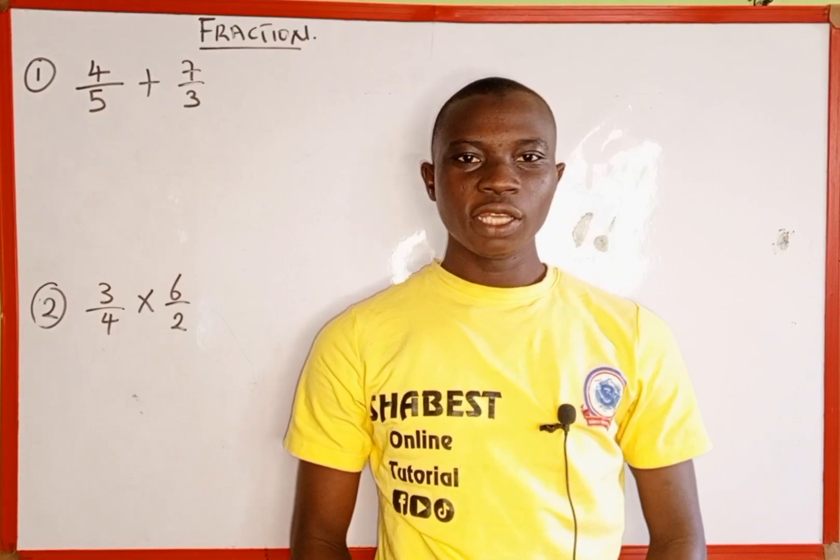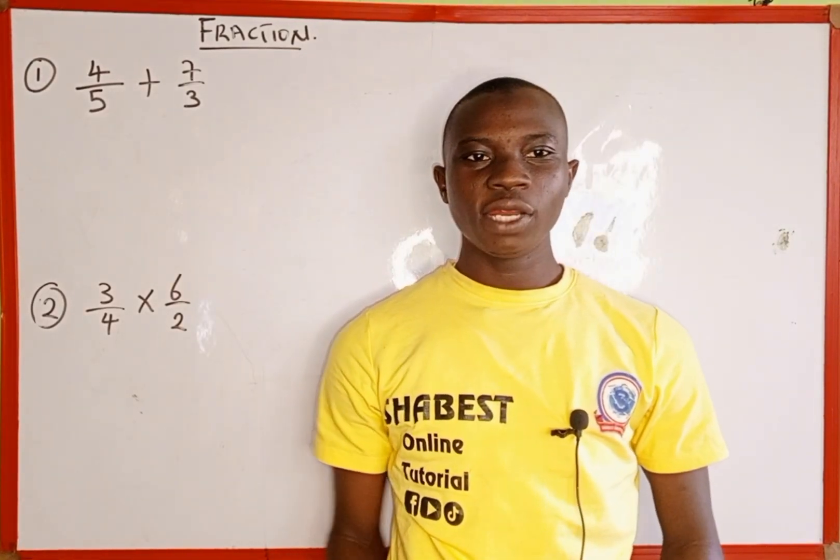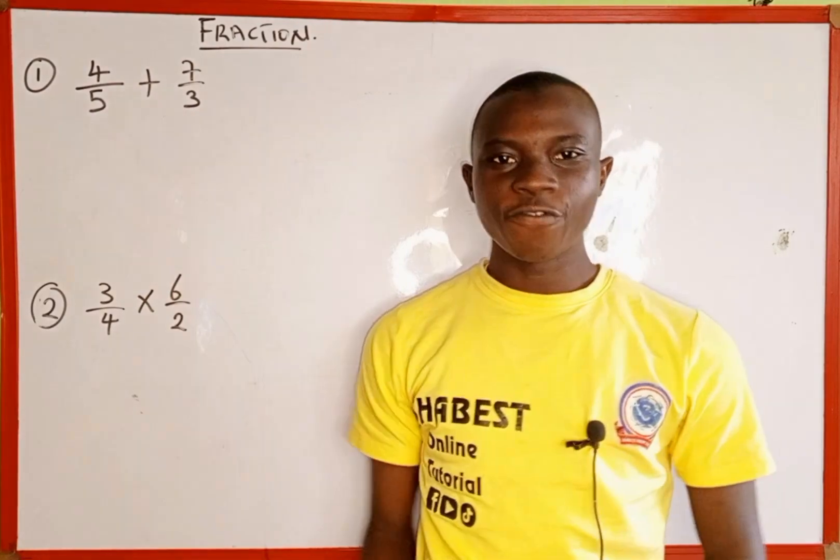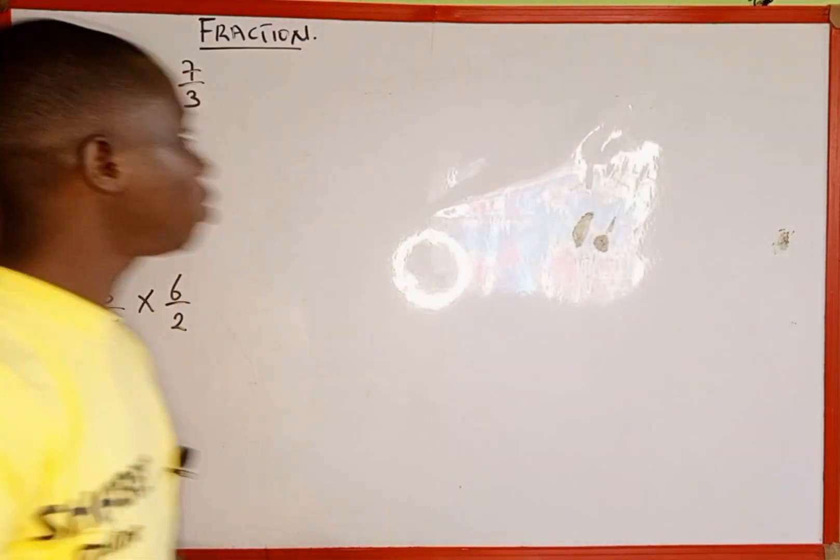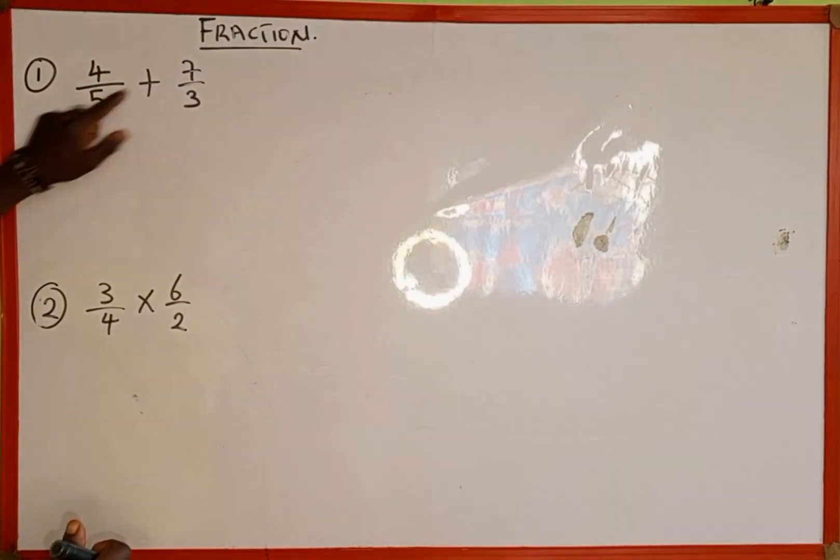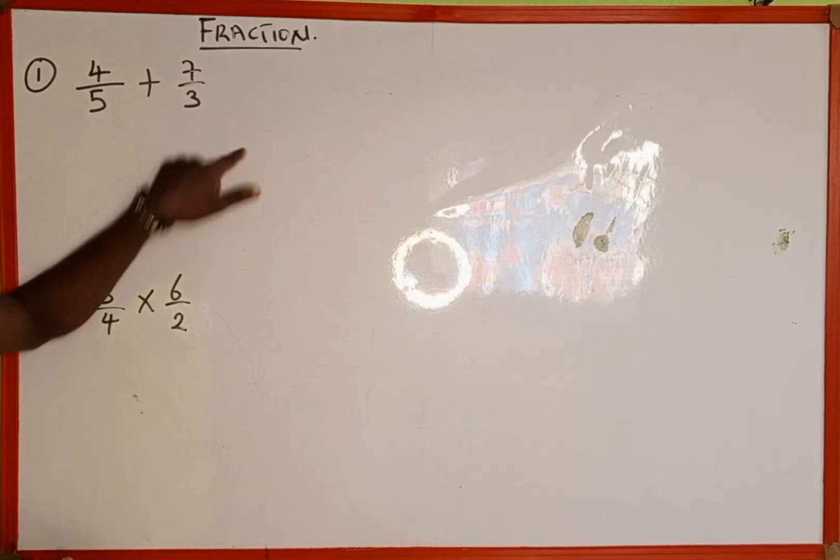Hello everyone, you are welcome back to Shabez Online Tutorial. In today's tutorial, we're going to learn how to add and multiply fractions. The given fraction on the board is 4 over 5 plus 7 over 3.